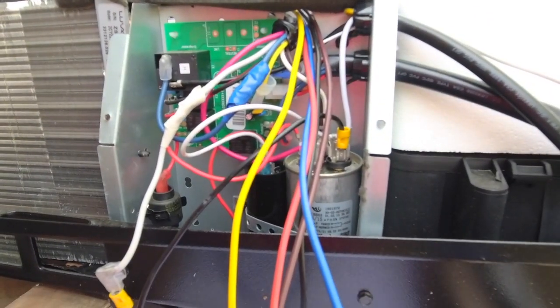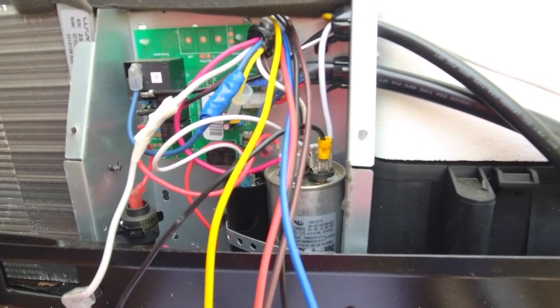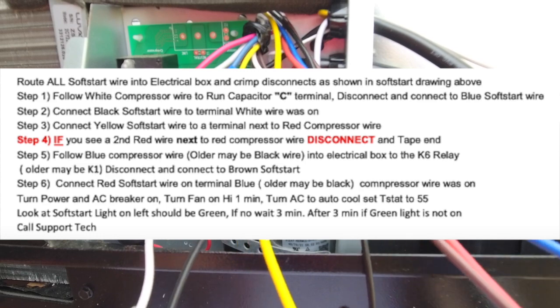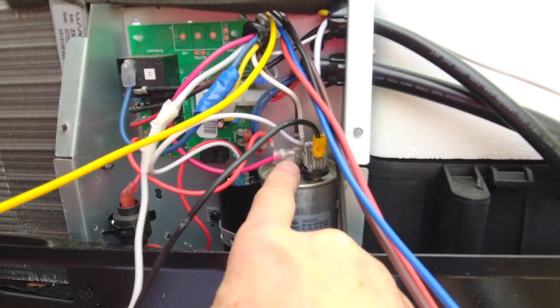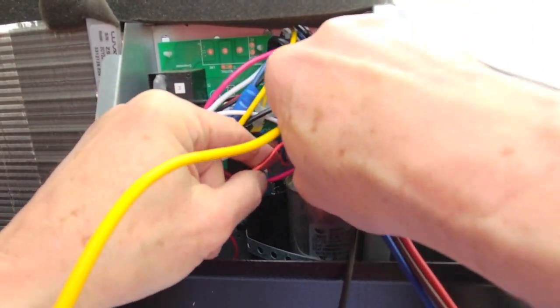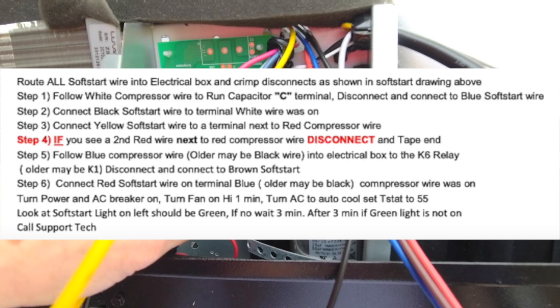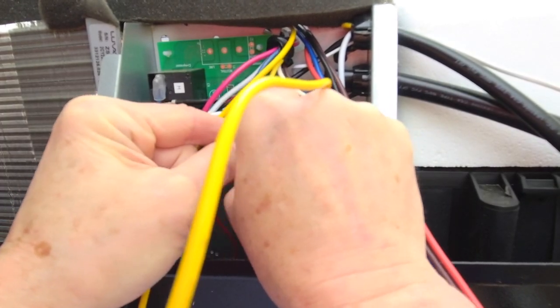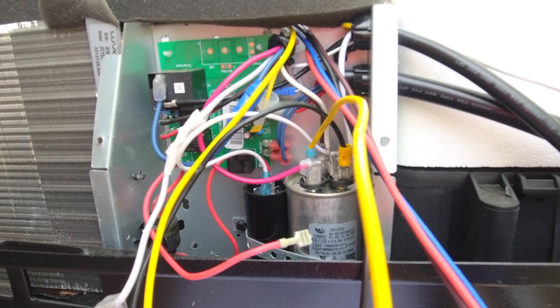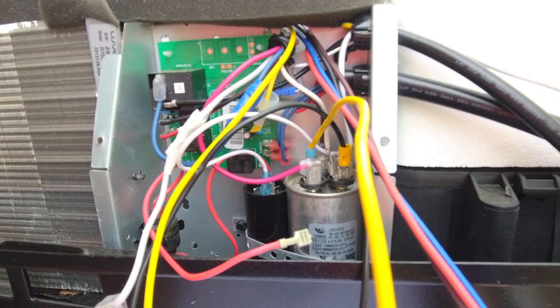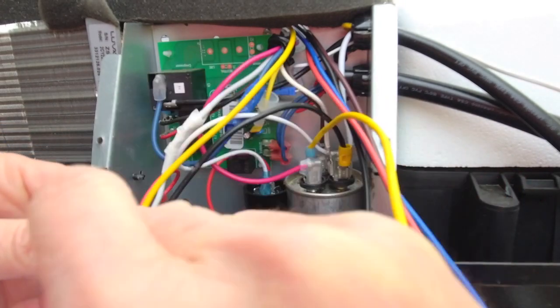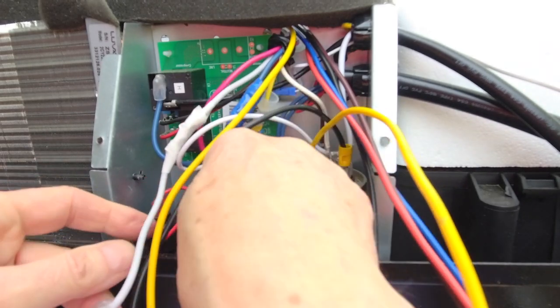Next part: connect the yellow soft start wire to the terminal next to the red compressor wire. Here's the red compressor wire right here and we're going to poke that down here. That's in place. If you see a second red wire next to the red compressor wire, disconnect it and tape the end. I'm going to pop that off and tape that end up to keep him out of trouble. We'll poke him out of the way. All done.